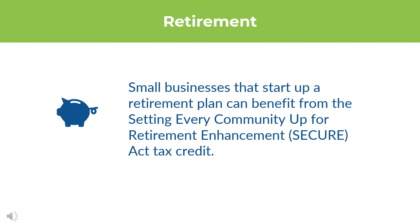Small businesses that start up a retirement plan can benefit from the Setting Every Community Up for Retirement Enhancement — SECURE Act — tax credit. Eligible employers may be able to claim a tax credit of up to $5,000 for three years for the setup and administrative fees associated with starting a SEP retirement plan, SIMPLE IRA, or a 401(k) plan. You can learn more about this opportunity from the resource accompanying this video. Be sure to talk with your tax professional about this tax credit opportunity.